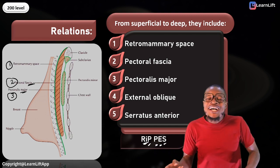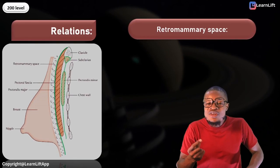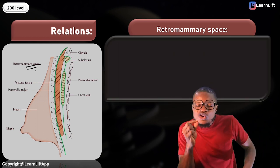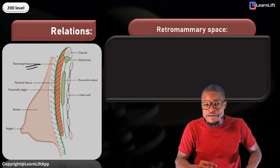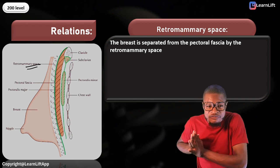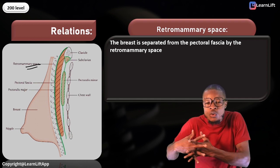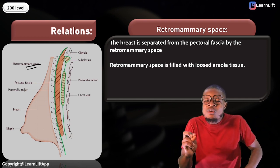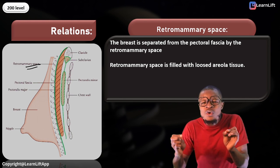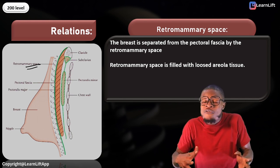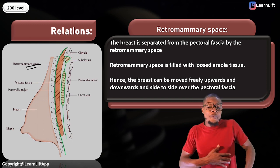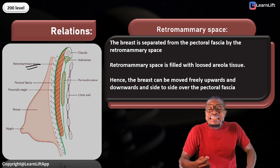Let's begin with the first relation: the retromammary space. The breast is separated from the pectoral fascia by the retromammary space. The retromammary space is filled with loose areolar tissue — fibro-fatty tissues made up mainly of fat.